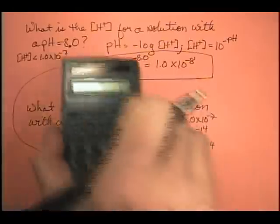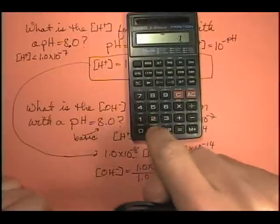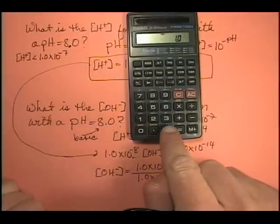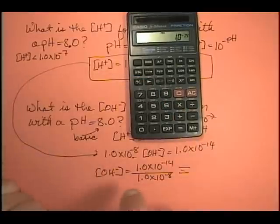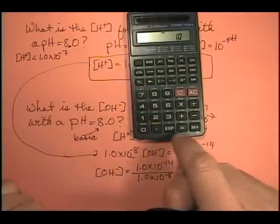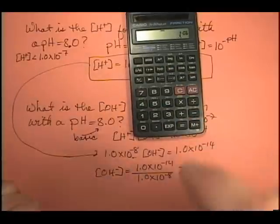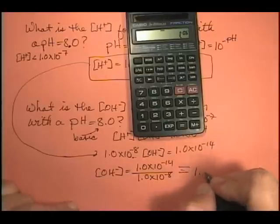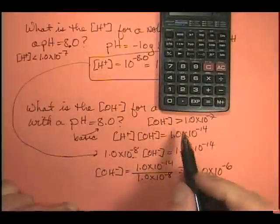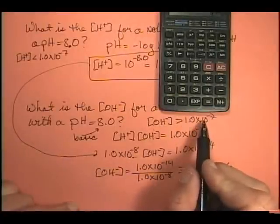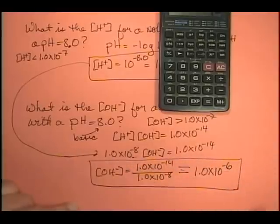Let's put this in the calculator. 1.0 times 10 to the minus 14 divided by 1.0 times 10 to the minus 8 equals 1.0 times 10 to the minus 6. Is that reasonable? My hydroxide ion concentration is greater than 10 to the minus 7, and 10 to the minus 6 is greater than 10 to the minus 7. That's a reasonable answer.